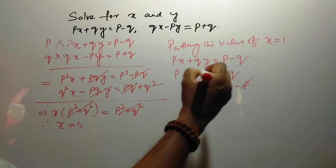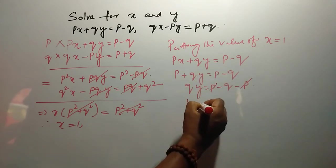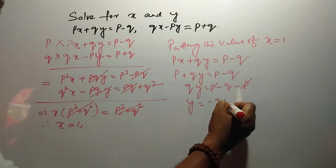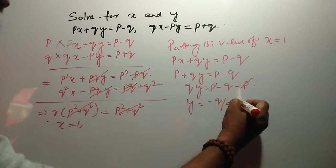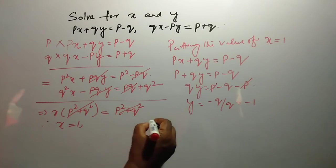So, plus P minus P is cancelled. So, Y is equal to minus Q upon Q is equal to minus 1.